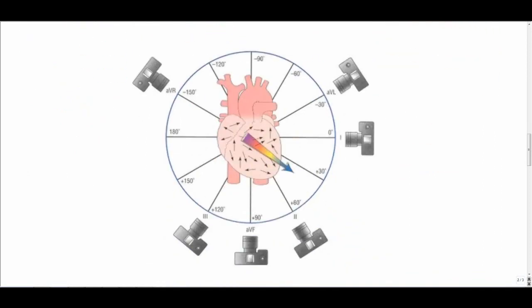When you use the limb leads, you form an array. And this array can tell you the exact depolarization of the heart.